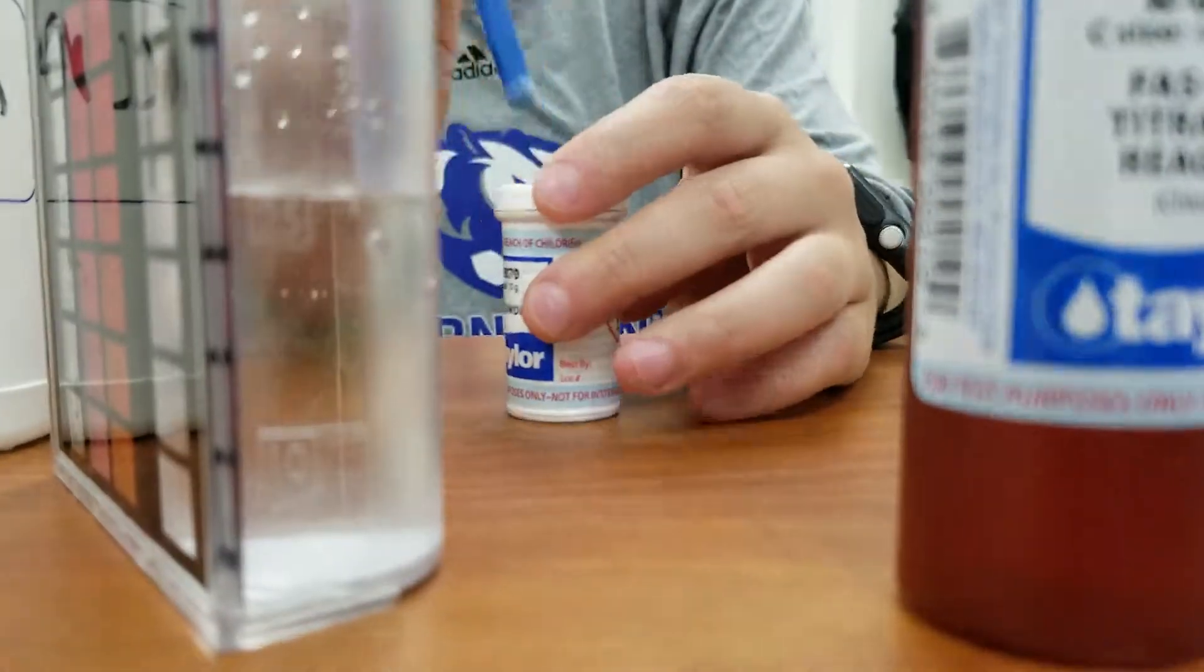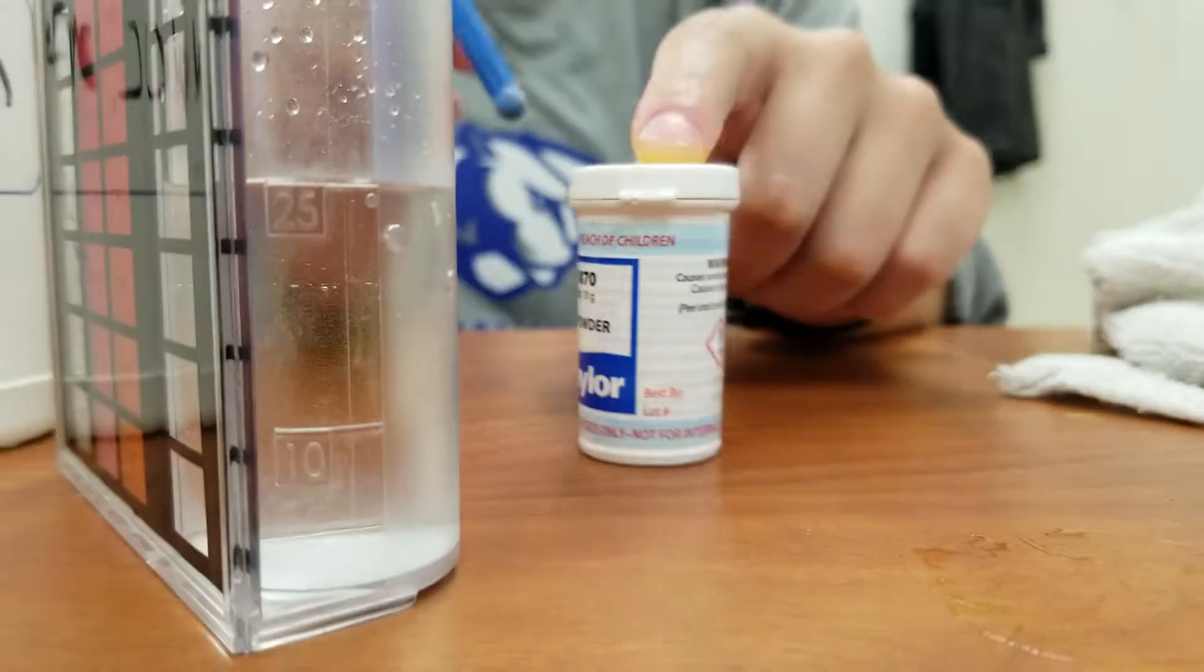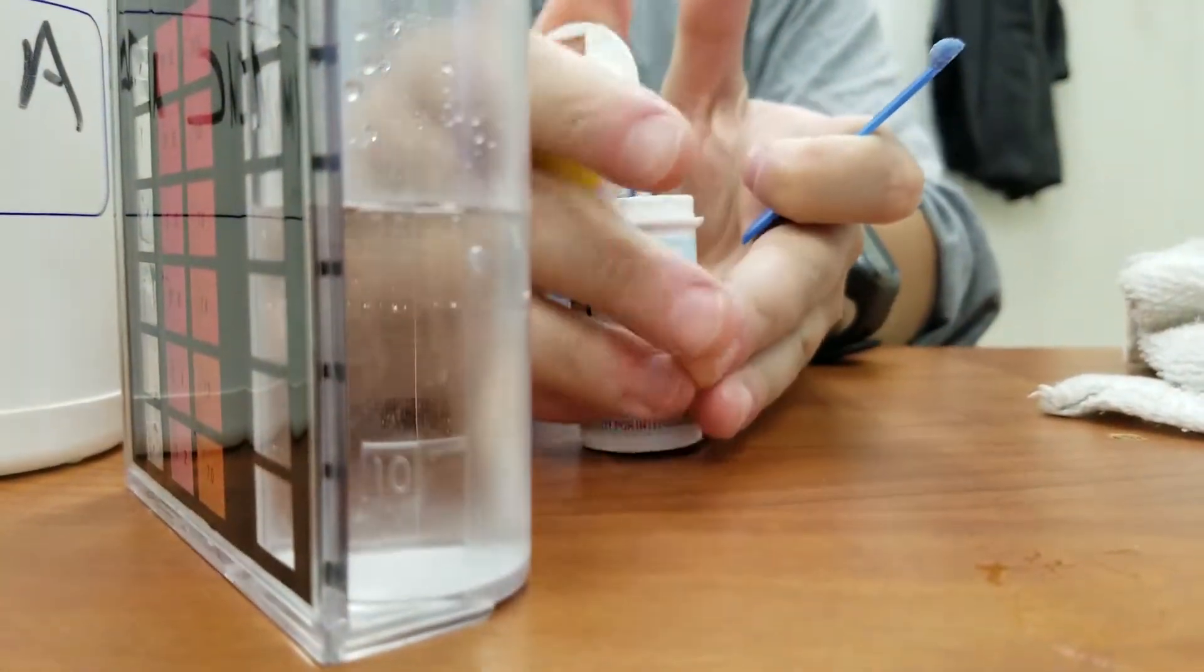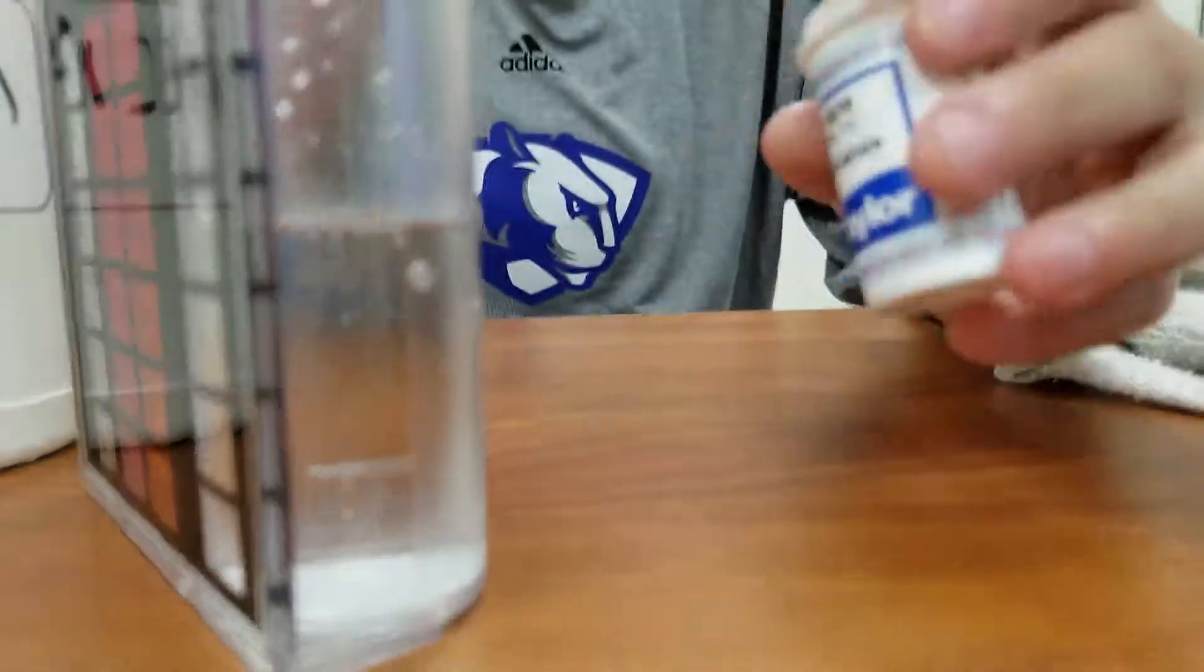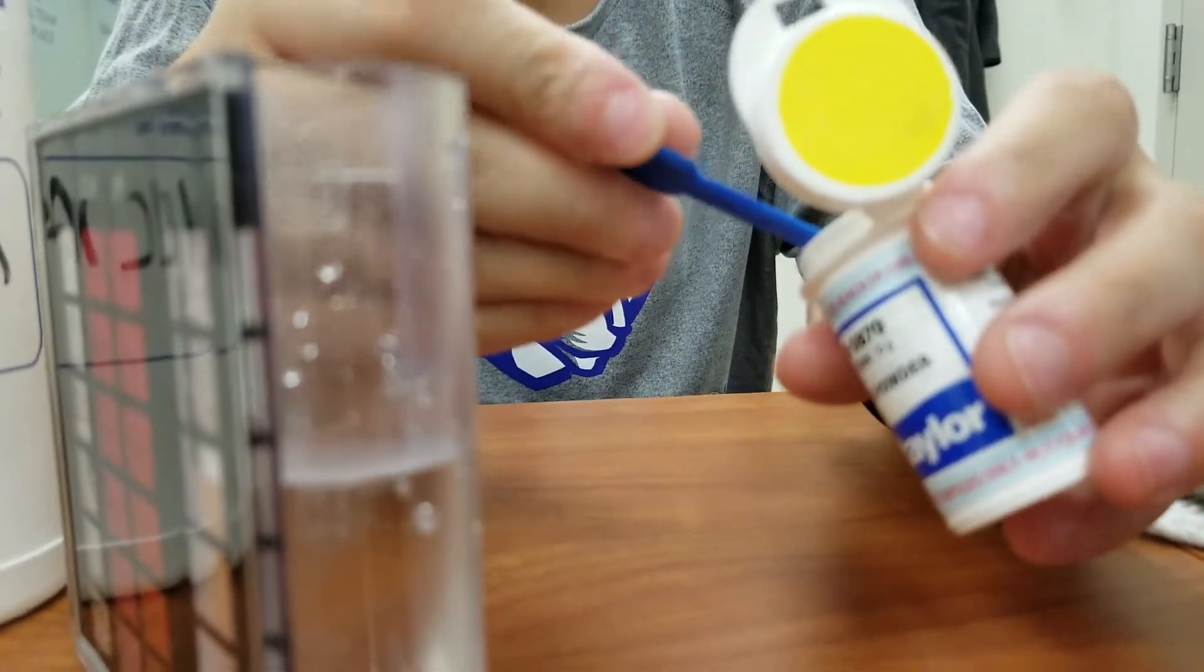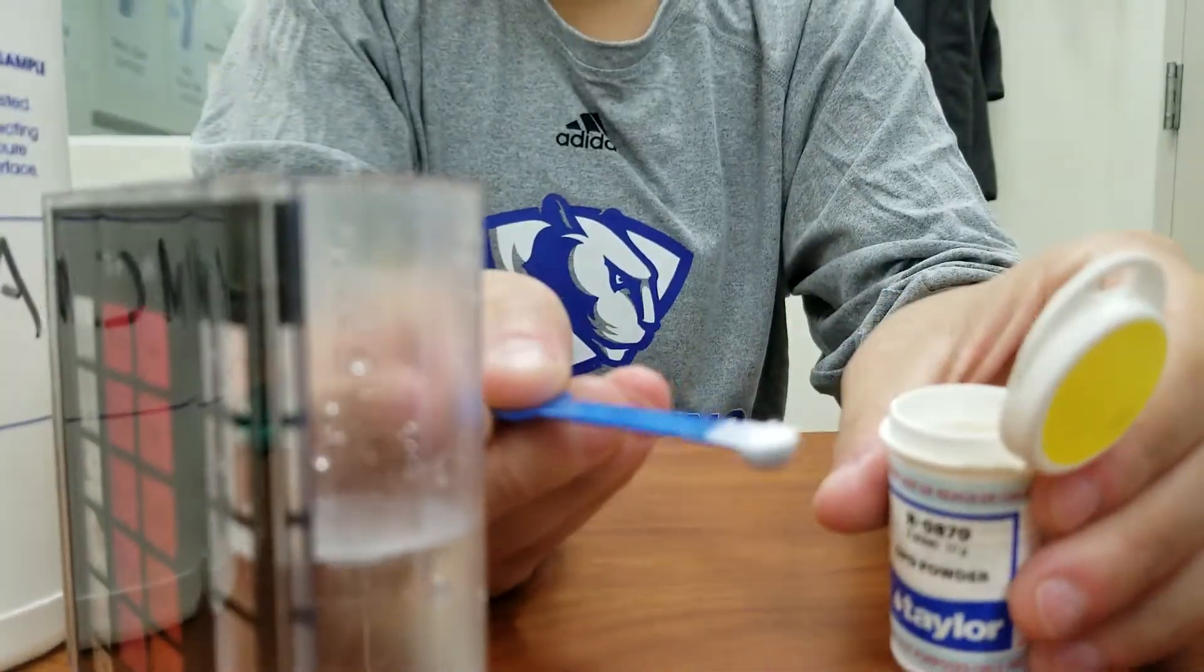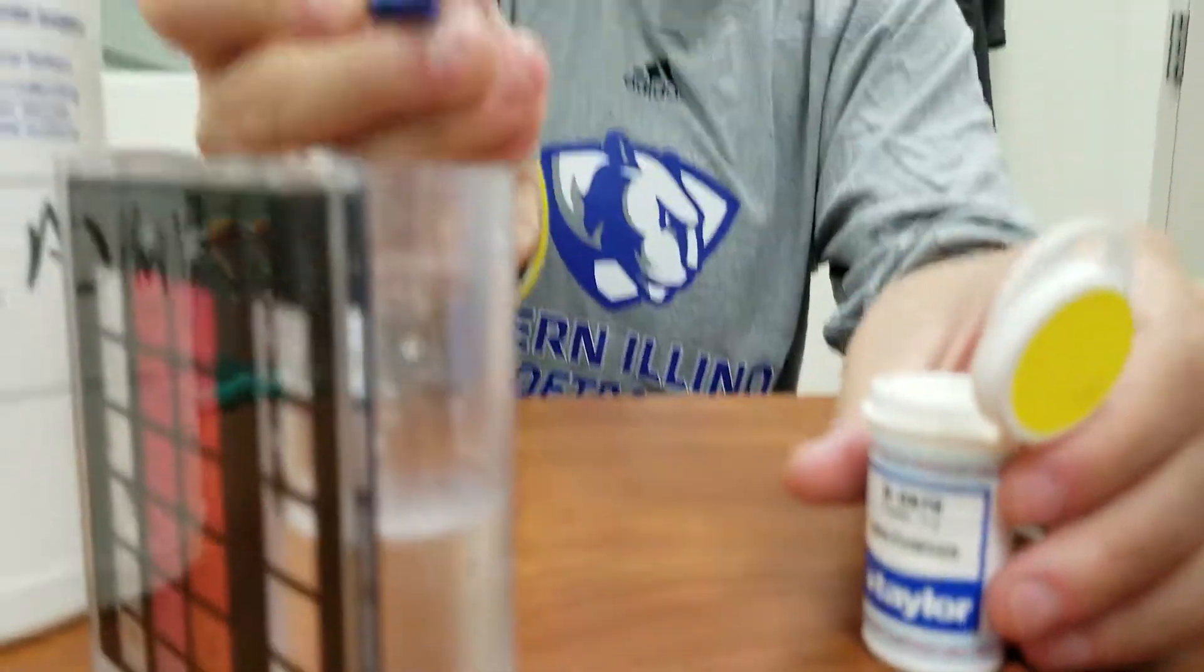Now we're going to take the powder agent, R0870, and we're going to take two scoops out of the circular tip of the handle here, just like that. Dump it in.